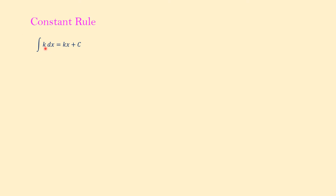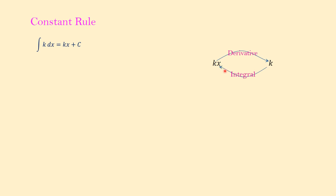In this video we want to learn the constant rule, a very simple and basic rule in integration. The integral of k dx, where k is a constant, equals kx plus c. For example, k can be 2, negative 2, 4, 3 — any constant. If you remember from derivatives, the derivative of kx is k, so the anti-derivative of k, or integral of k, is kx, because integration is the opposite of differentiation.